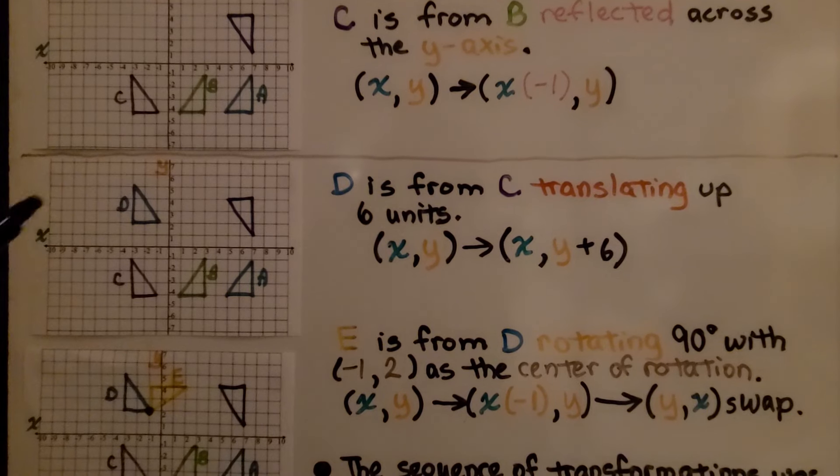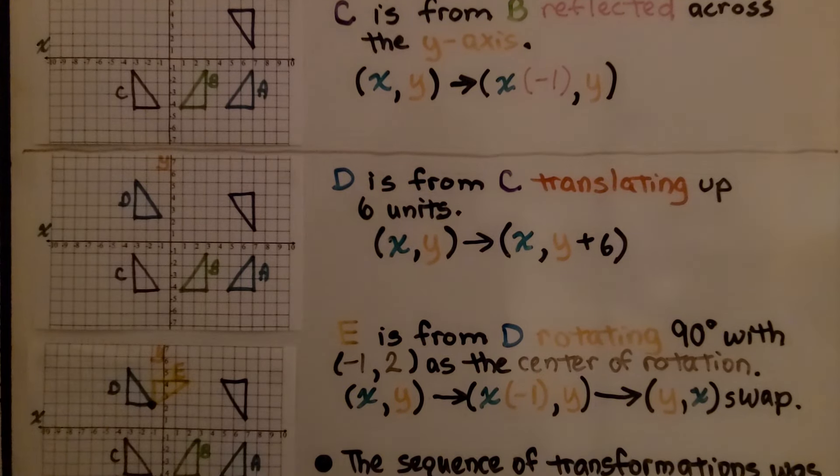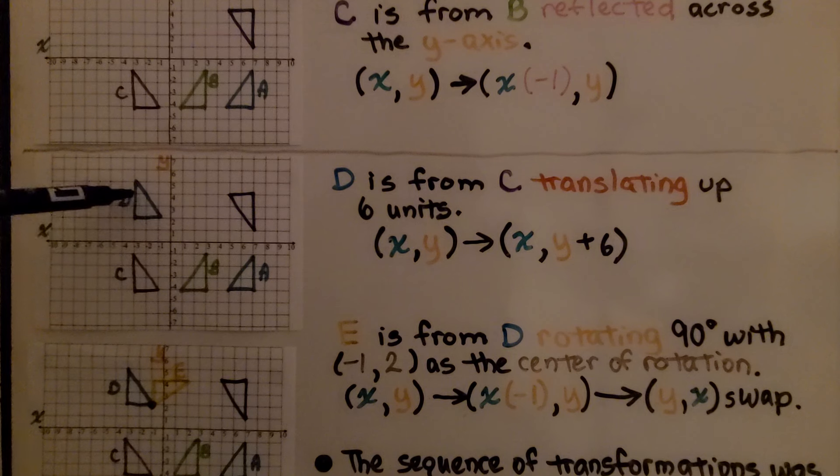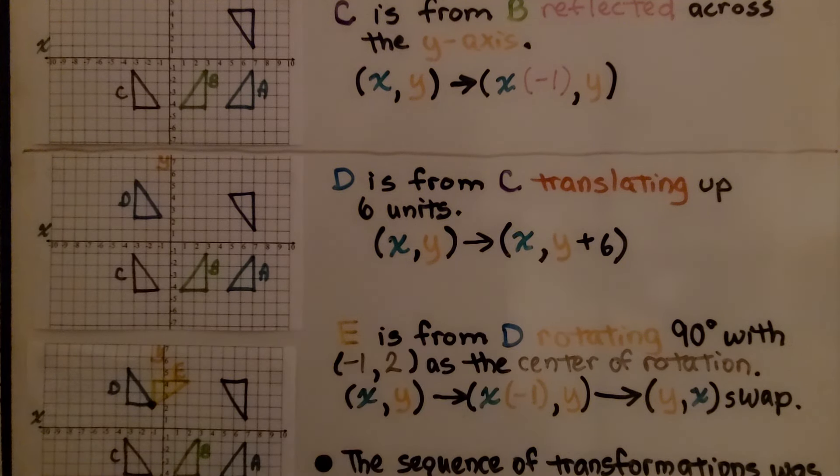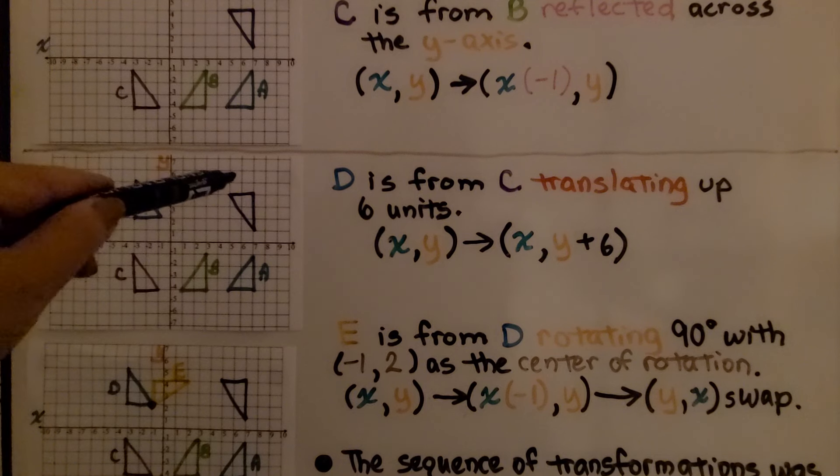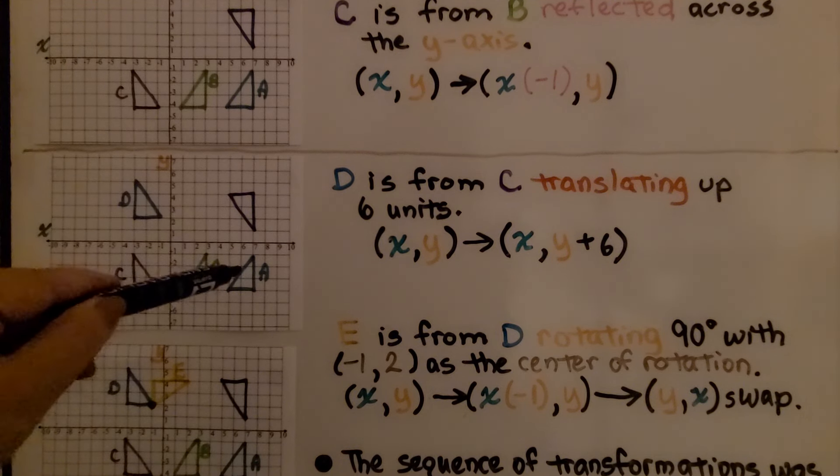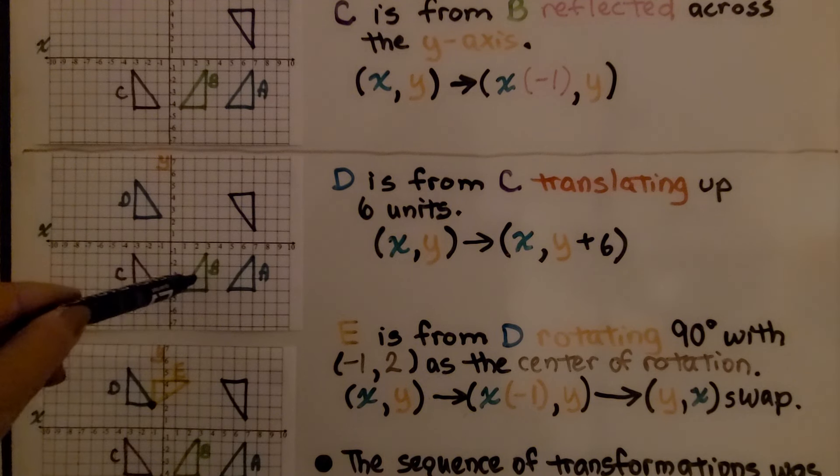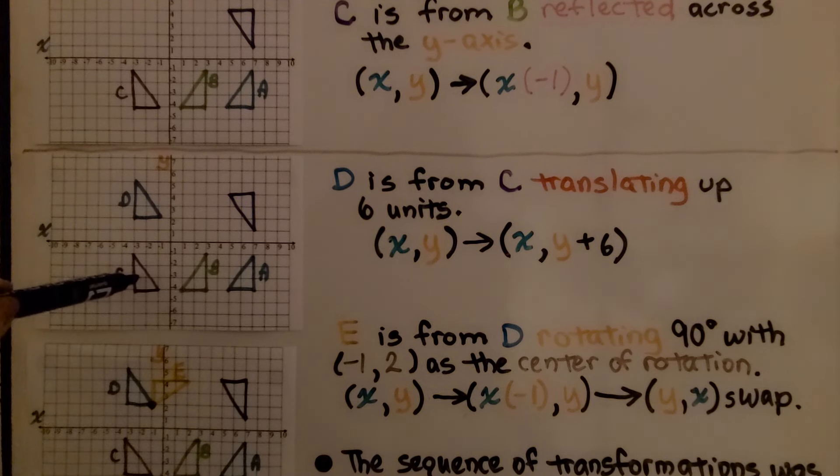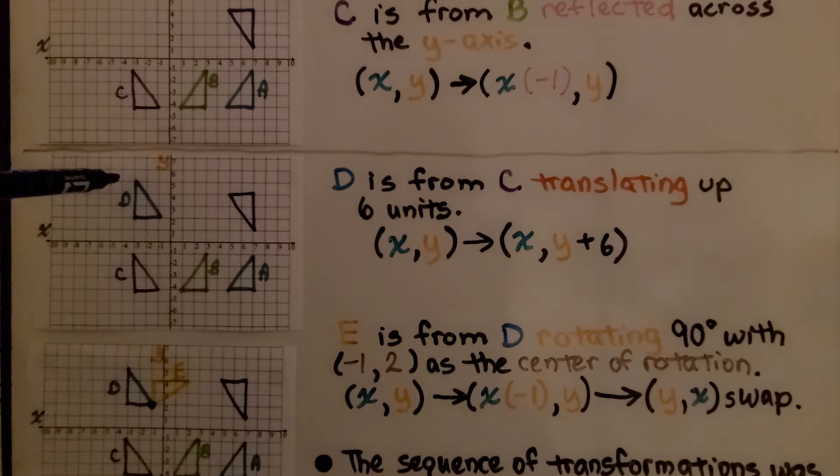Now we're here. Now we're at D. We have D up here. It's from translating C up 6 units. Since we translated up 6 units, we added 6 to our y values. Now we've gone from here, reflected across the x-axis to get A, translated to get B, reflected across the y-axis to get C, and translated up to get D.